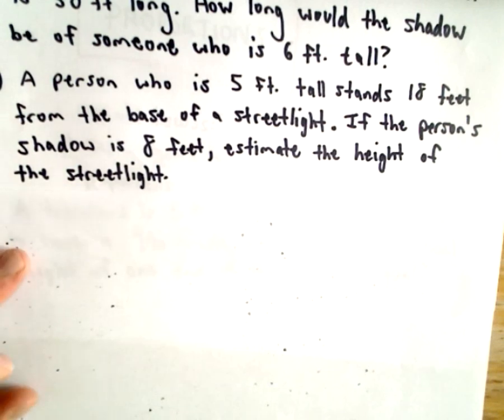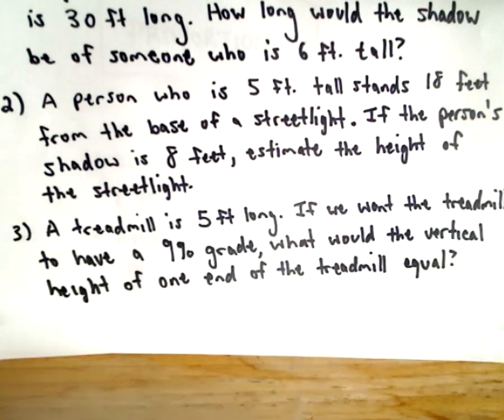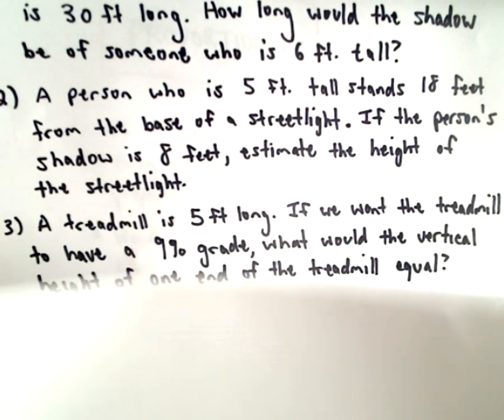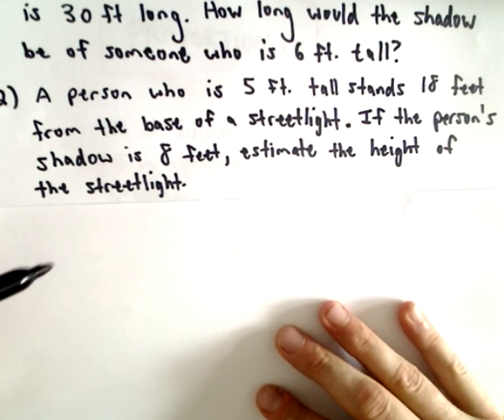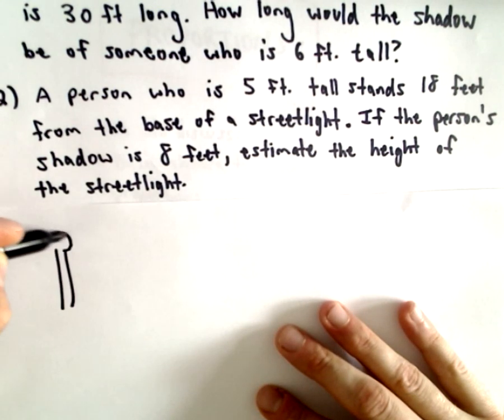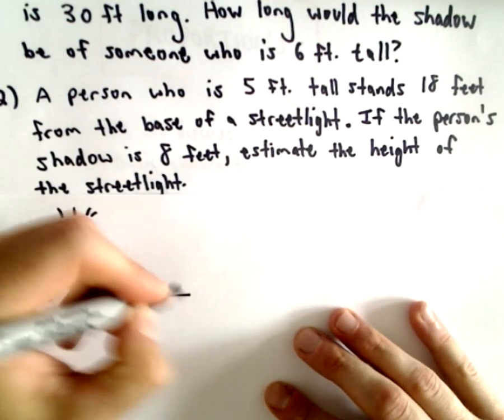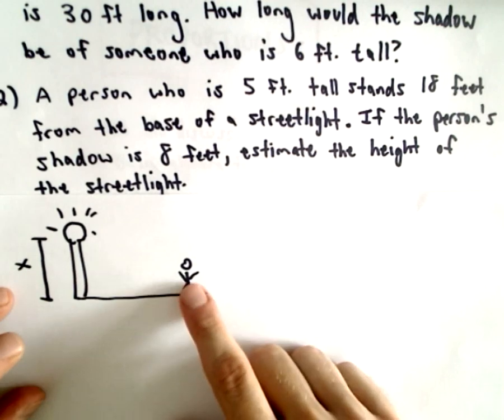Part 2 will be a little more complicated. We've got a person who's 5 feet tall. They stand 18 feet from the base of a street light. And if the person's shadow is 8 feet, we want to find the height of the street light. This one's a little more complicated. Here's our little street light.